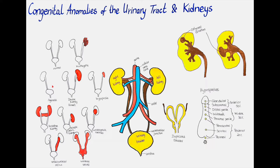Segmental renal hypoplasia, or Ask-Upmark kidney, is a type of kidney hypoplasia that usually leads to severe hypertension. In this defect some areas of the kidney don't develop normally. They usually present with scar formation, atrophy of the tubules, and hyperplasia of the renal blood vessels. In the affected segment often no or only few glomeruli can be found.